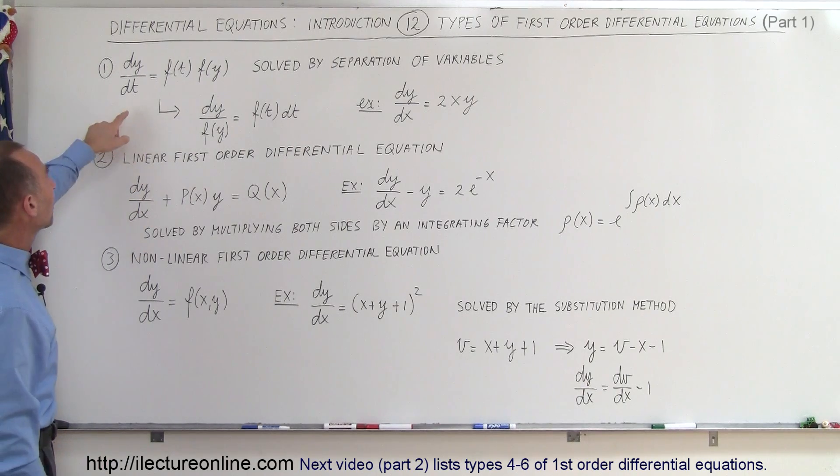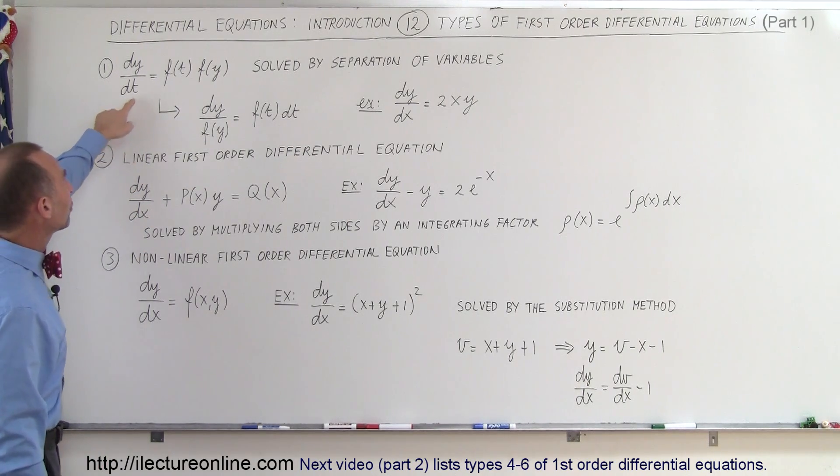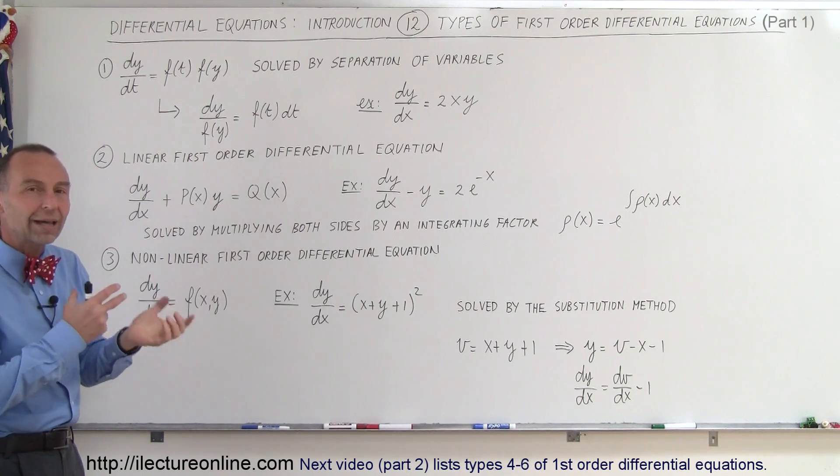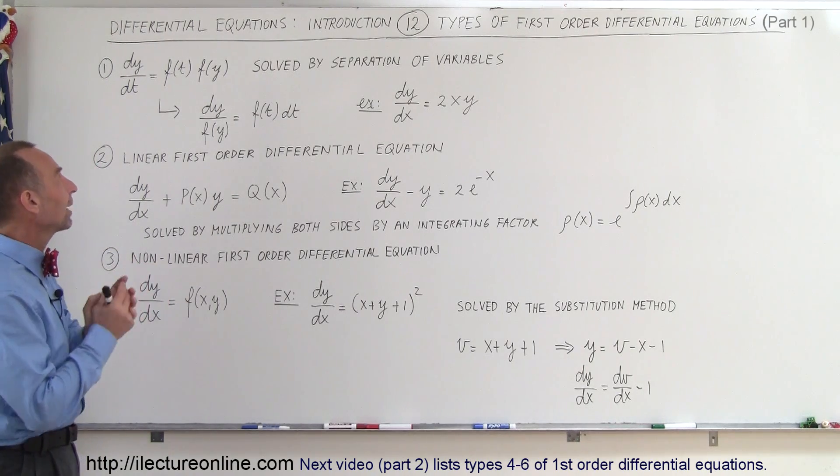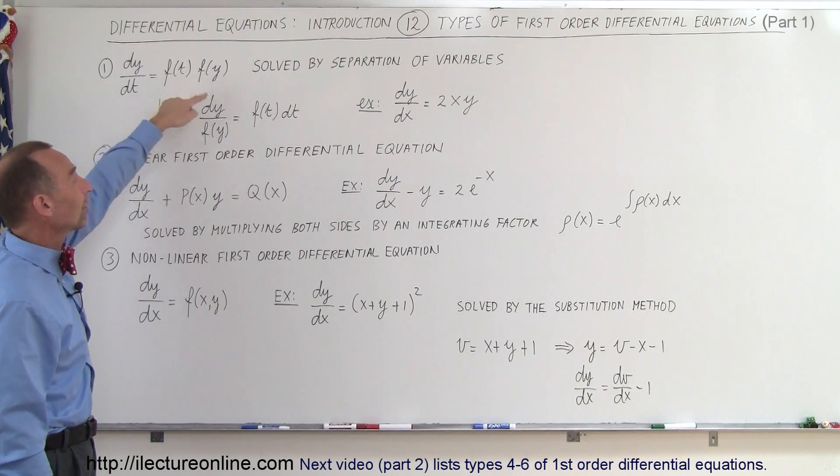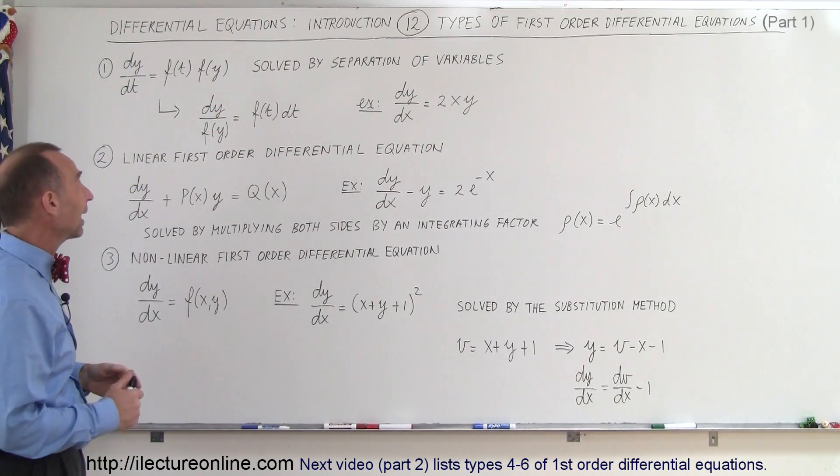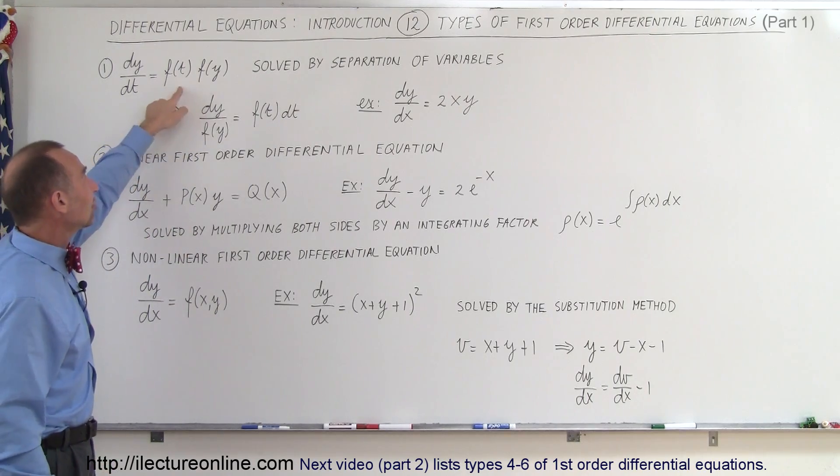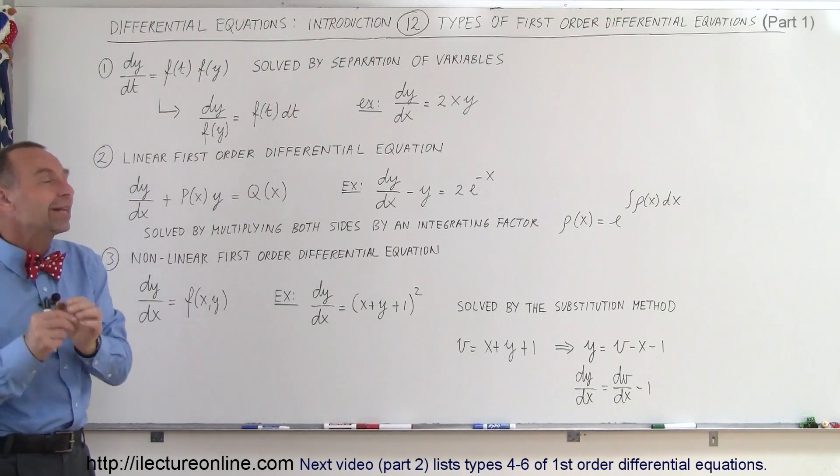So the first one is of the type where I have dy/dt is equal to a function of t times a function of y. So it's like the y and the t are multiplied together. Now they could be t times y or t squared times y cubed or something like that. And so the way we can solve one, because there's a multiplication here, we can actually solve it by separating the variables.